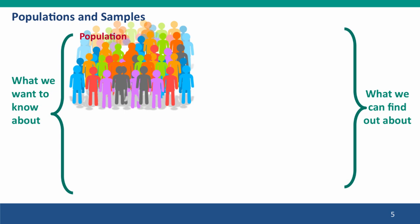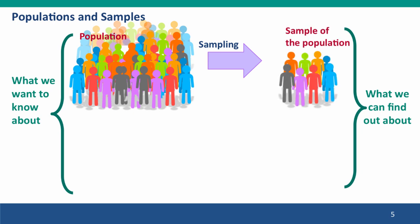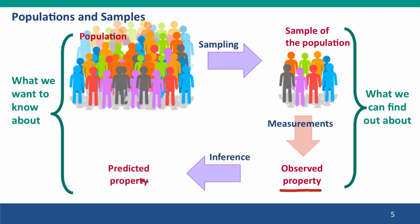So, imagine we have a large population that we want to know the properties of, say, the properties of all the Asian peoples in the world. We cannot afford to analyze everybody, the whole population, to find out their properties. Instead, we would analyze a small sample from the population. We would characterize the sample for whatever the property is that we're interested in, and then we'd use this observation on the sample to make inferences about the property of the whole population.